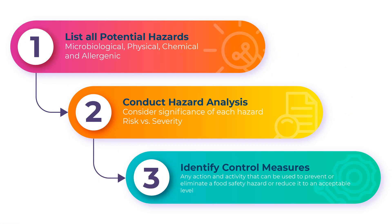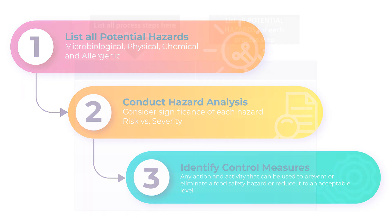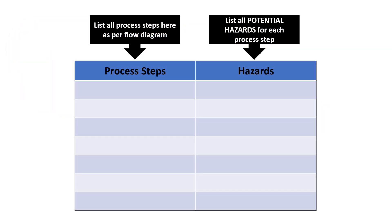Stage number one is about listing all the potential hazards which are there in each process. In the flow diagram you have listed all the processes, so you list those processes and in front of each process you write down the potential hazards. It can be microbiological, physical, chemical, or allergenic hazards based on the scope and terms of reference we have discussed previously. Once you list the hazards, you have completed stage number one.